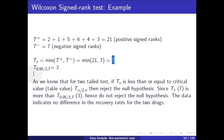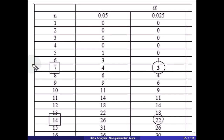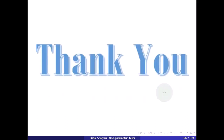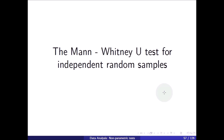The significance level is 5%, so the table value is t_{0.025, 7} = 3. Since T_s = 7 is greater than the table value of 3, we do not reject the null hypothesis. The data indicates no difference in the recovery rates for the two drugs. In the next video we will talk about the Mann-Whitney U test for independent random samples.